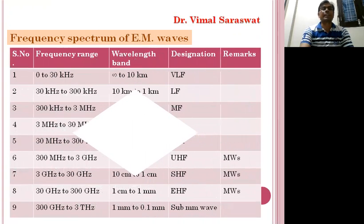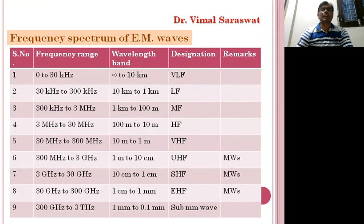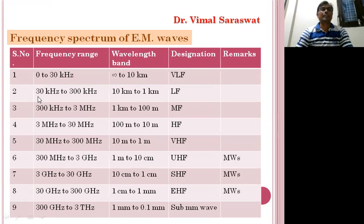The frequency spectrum of electromagnetic waves is shown here. The first wave ranges in frequency from 0 to 30 KHz and in wavelength from infinity to 10 km. This wave is known as the wave of very low frequency. Another one ranges in frequency from 30 KHz to 300 KHz and in wavelength from 10 km to 1 km. This wave is known as the wave of low frequency.